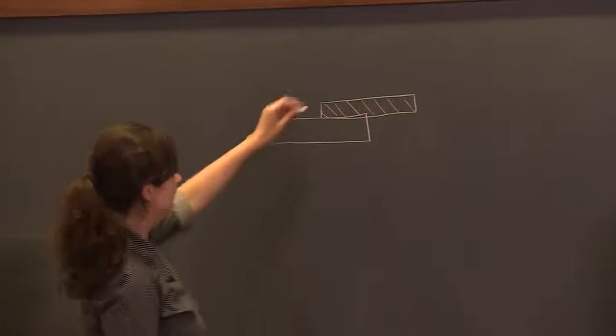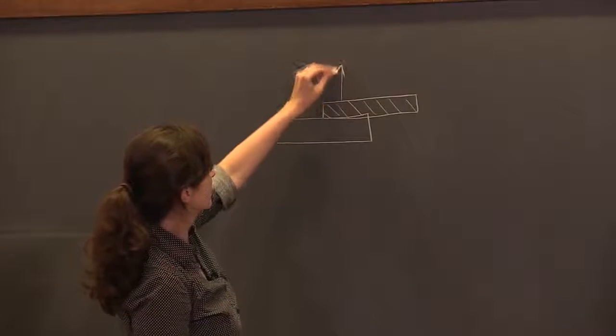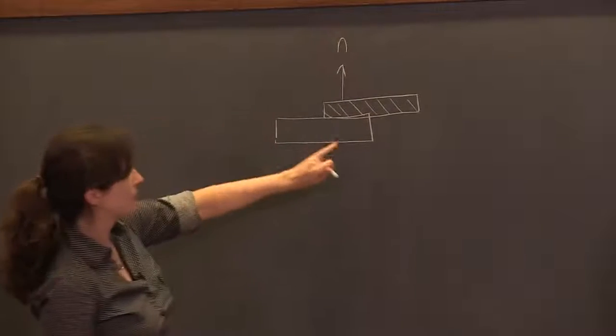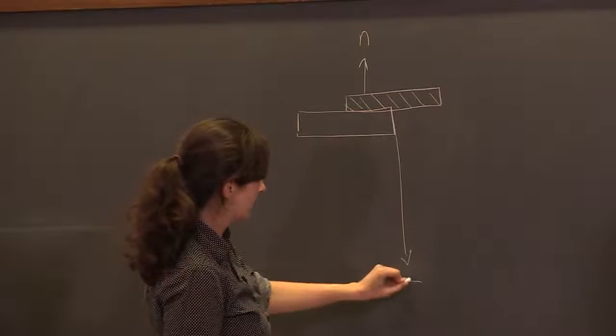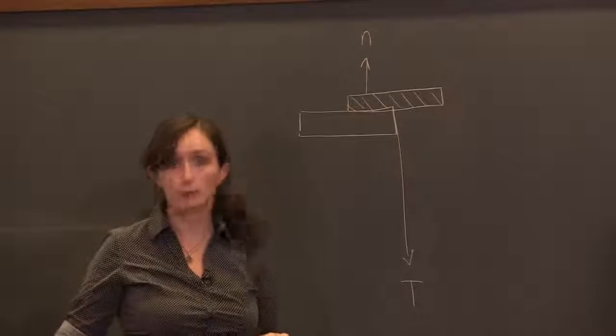So there's a normal force at this end upwards from the table surface. There's a downwards tension from the string that's holding the weight.